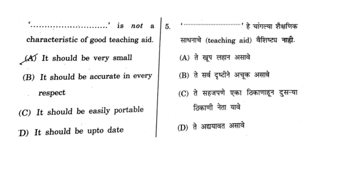Next question: dash dash dash is NOT a characteristic of good teaching. The characteristics of good teaching material are: it should be accurate in every respect, easily portable, and up to date — so B, C, D are characteristics. For option A, it says it should be large enough so that all students in the classroom can see it. That is the main characteristic — it should be large enough — so A is the wrong answer here, meaning it should not be a characteristic. Mark A as correct.